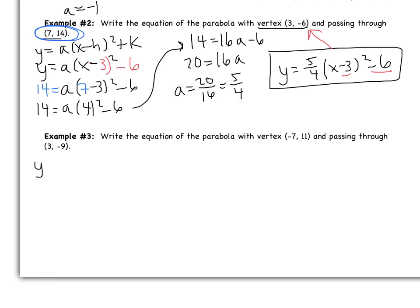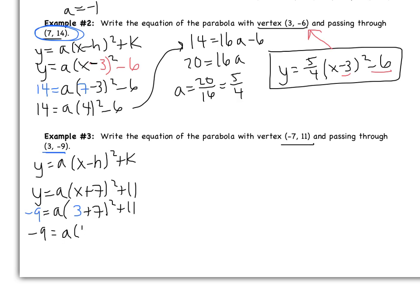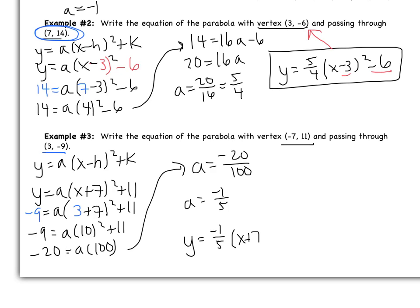So you should have started by writing the general equation. Your vertex is negative 7, 11, so you get y equals a(x add 7) squared add 11. Then you should have substituted this point in for x and y in order to find a. So I have negative 9 equals a multiplied by 10 squared add 11. If I subtract 11, I get negative 20 equals a multiplied by 100, because 10 squared is 100. That gives me a equals negative 20 over 100. Both 20 and 100 are divisible by 20, so really this is negative 1 over 5. So my final answer should have been y equals negative 1 fifth (x add 7) squared add 11.